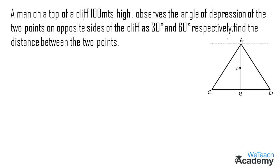The angle of depression to point C is 30 degrees, so we can write the alternate angle — that is, angle C is equal to 30 degrees. The angle of depression to point D is 60 degrees, and the alternate angle gives angle D equal to 60 degrees.